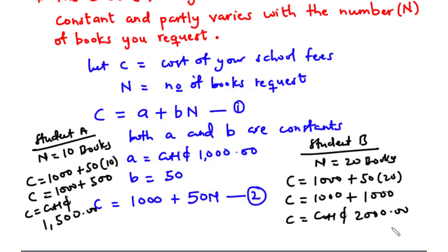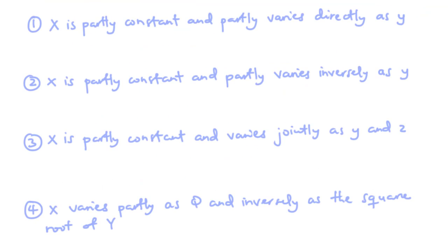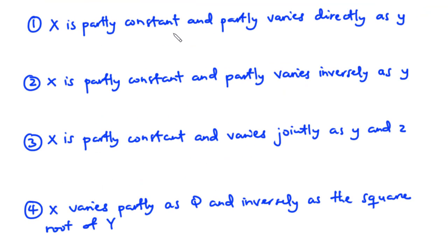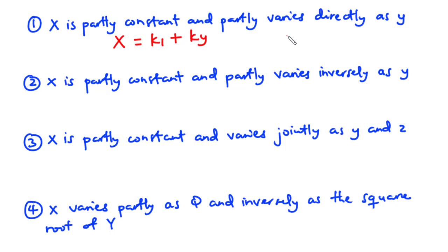Now let's look at some relations we are likely to encounter when solving questions related to partial variation. For the first case, x is partly constant and partly varies directly as y. This becomes: x equals a constant k1 standing alone, plus k times y — because if x varies directly as y, then x equals ky.